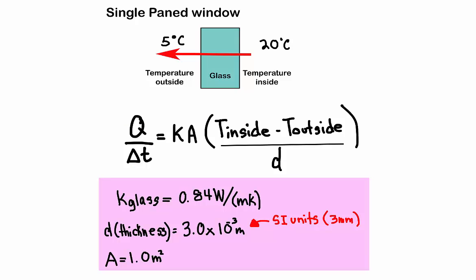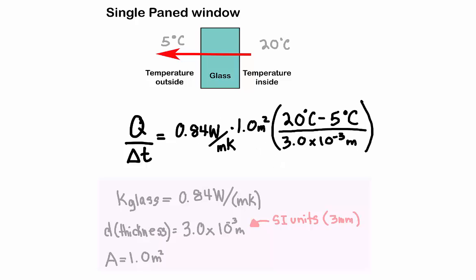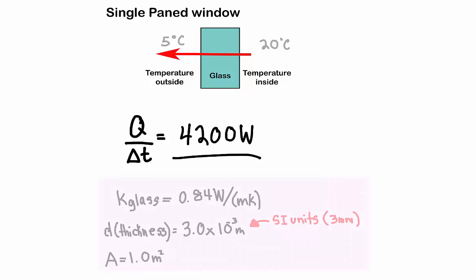We can find the K value for glass in your textbook. Now you can go ahead and plug the values in. And this is what we get. This is how much heat we are losing, which will increase your heating costs.